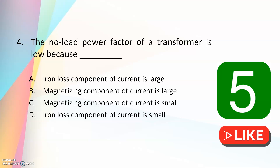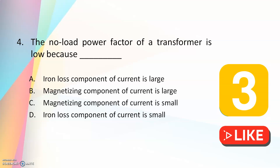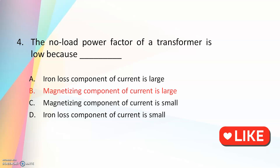Fourth question: no-load power factor of a transformer is low because — the iron loss component of current is large, the magnetizing component of current is large, the magnetizing component of current is small, or the iron loss component of current is small. The answer is the magnetizing component of current is large. Under no-load conditions, the magnetizing component has a very high magnitude which leads to poor power factor.